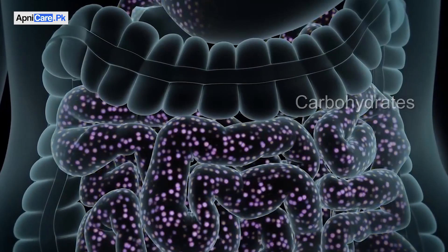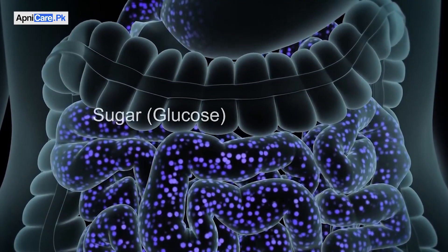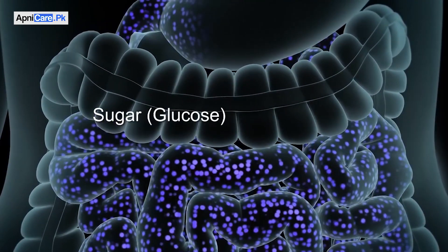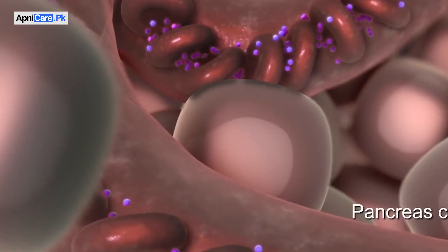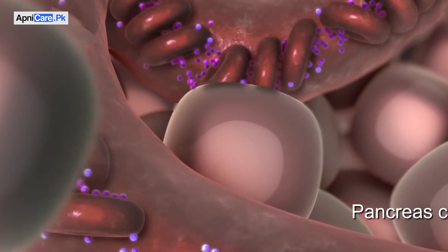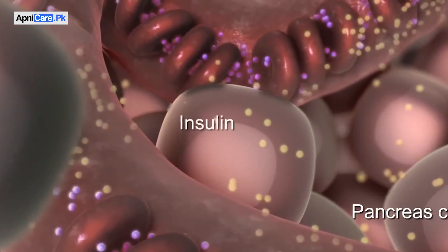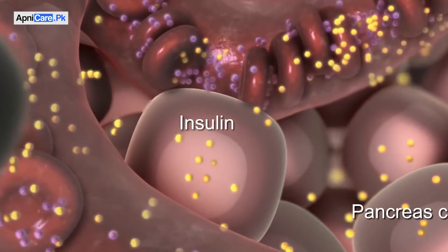And when we eat a lot of glucose or something like sugar, it increases our blood sugar. The result is that the excess sugar is stored as belly fat.